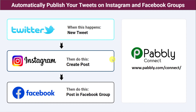The second option is to create an automation so that whenever a new tweet is created in the Twitter account, a new post will automatically be created in Instagram as well as in Facebook groups. There is no direct connection between Twitter, Instagram, and Facebook, so as a solution we are going to use Pabbly Connect — an automation and integration software. The best part is it doesn't require any coding skills or programming knowledge; even a non-technical person can do this very easily.